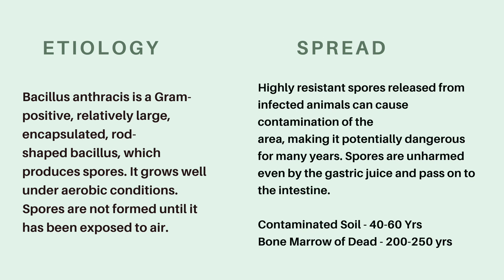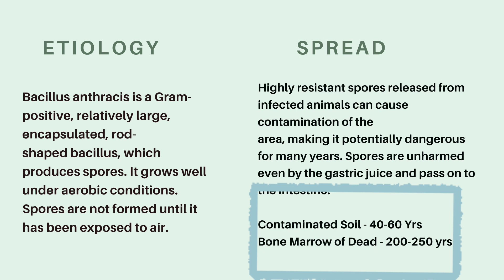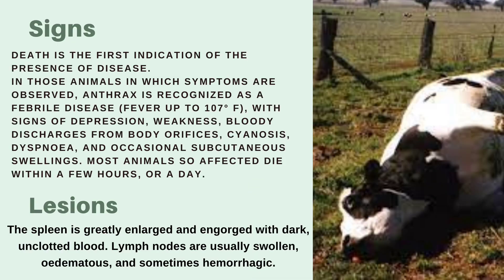Talking about the spread, anthrax spores are highly resistant — they are unharmed even by gastric juices, therefore they have the ability to pass into the intestine and cause infection there. Anthrax spores are so resistant that they can live in contaminated soil for up to 40–60 years and in the bone marrow of dead animals for around 200–250 years.